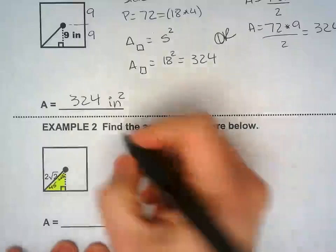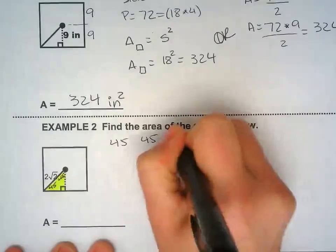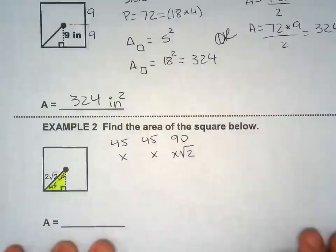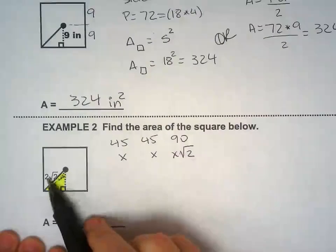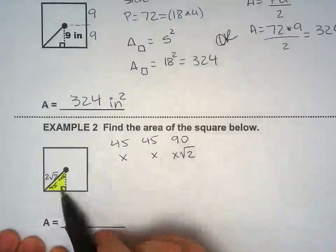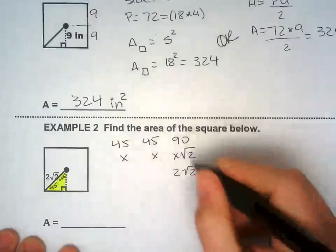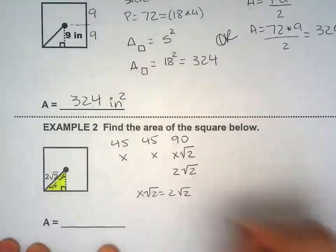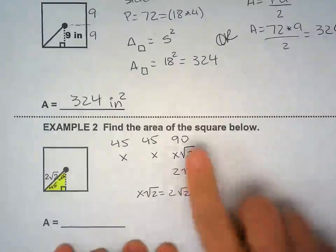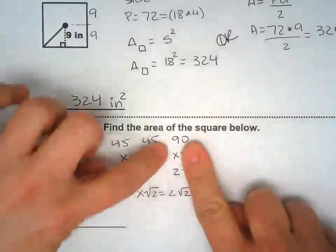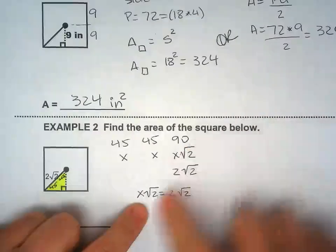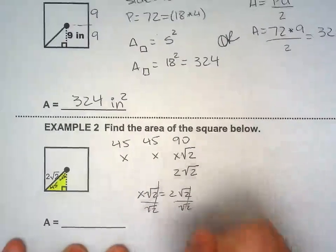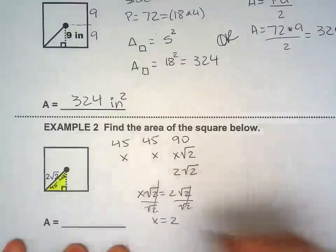45, 45, 90. And let's get the ratios. So, this is the hypotenuse. 2 square root of 2 is right across from 90. So, 2 square root of 2 is right across from 90. Some people are really good about just if these two are the same, so that means x equals 2. But by definition, these two are the same. And when you solve that by dividing both sides by a square root, these two simplify, these two simplify, x equals 2.